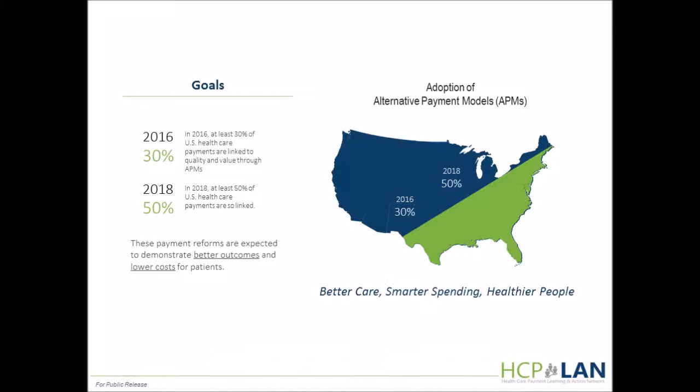Thanks, Ann. A lot has happened since our last Guiding Committee report out. We are fast approaching the one-year mark of the LAN, which was launched last March when the Secretary announced HHS goals of tying at least 30% of Medicare payments to quality and value through alternative payment models by 2016 and at least 50% by 2018. The LAN hopes to help extend these goals to the private sector and to state payers as well, and it's focused on not only changing healthcare payment but identifying what's needed for an APM to succeed. As a public-private effort involving diverse stakeholders across healthcare, to date over 1,400 individuals and organizations are participating in the LAN.